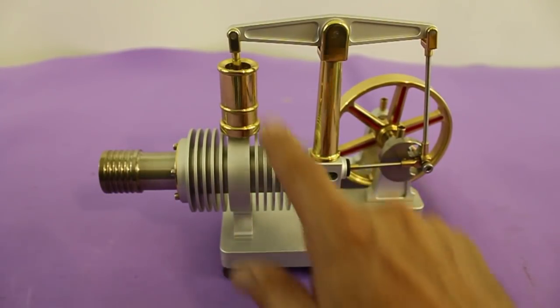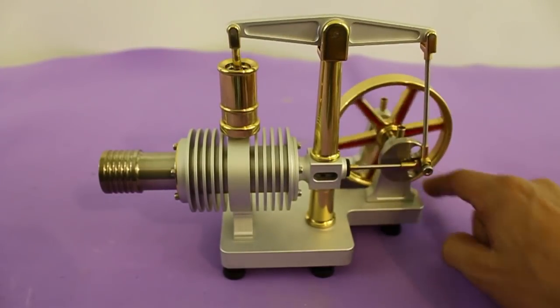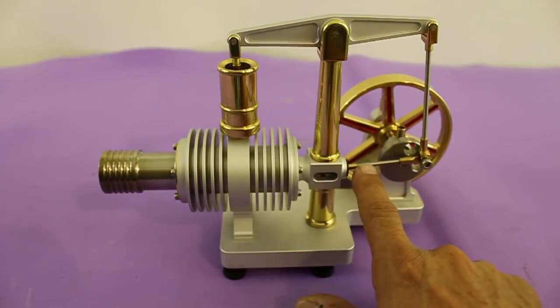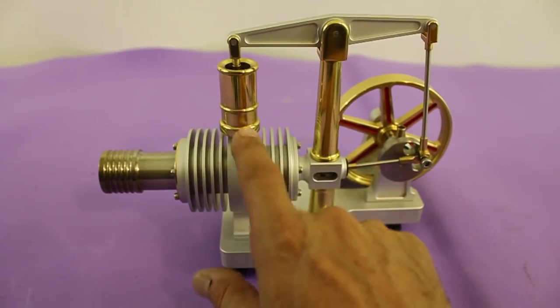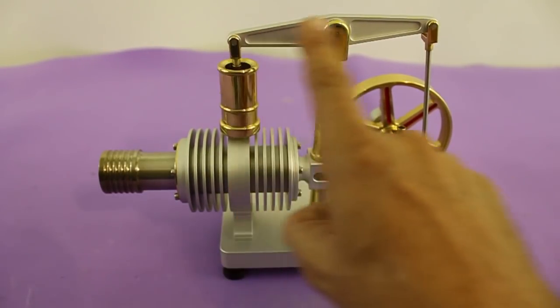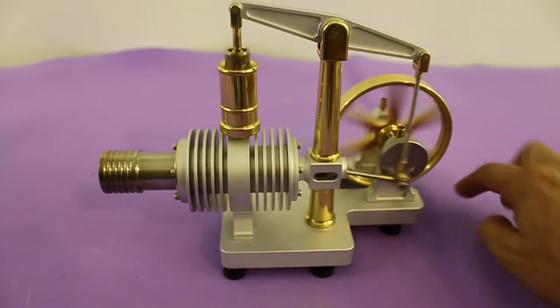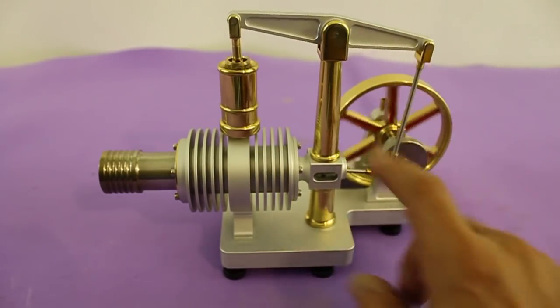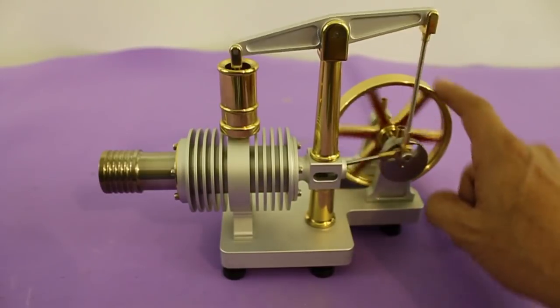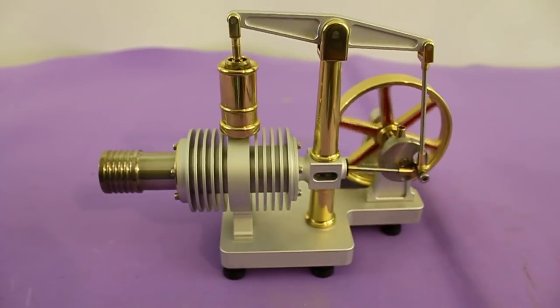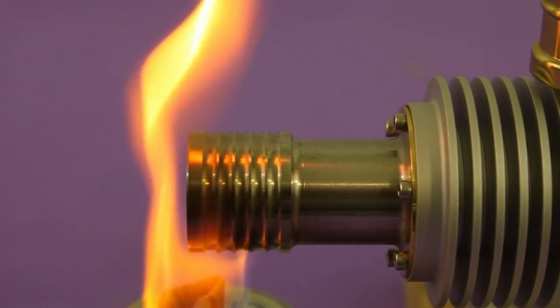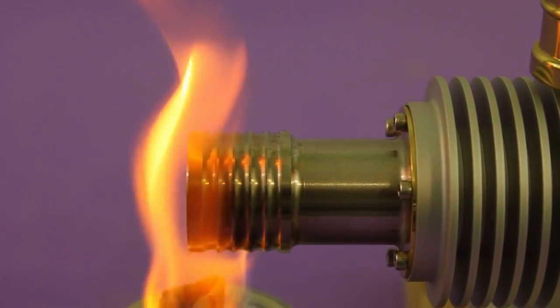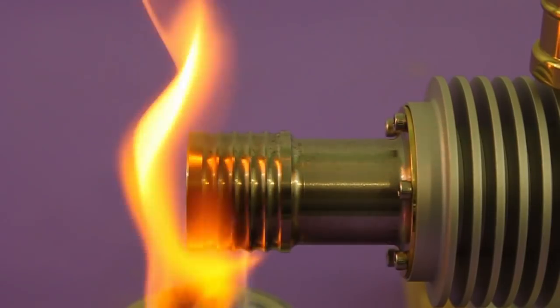Both pistons are connected to the flywheel. The displacer piston is directly connected here and the power piston is connected via this beam here that oscillates back and forth as the engine runs. Let's now see the motor running. It will take about 20 seconds to heat up.